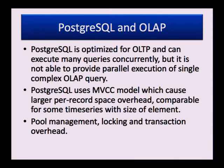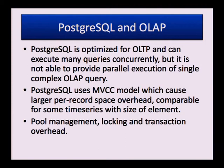Postgres has a classical architecture for relational database systems and is optimized for OLTP queries — it can execute a large number of queries concurrently. But if we need to execute a single very complex query, Postgres is not able to run it in parallel. Also, Postgres uses an MVCC model which requires significant per-record space overhead — about 24 bytes. If we deal with time series where element size is small, perhaps a dozen bytes, this per-record overhead is comparable to the element size itself, making storage very inefficient.